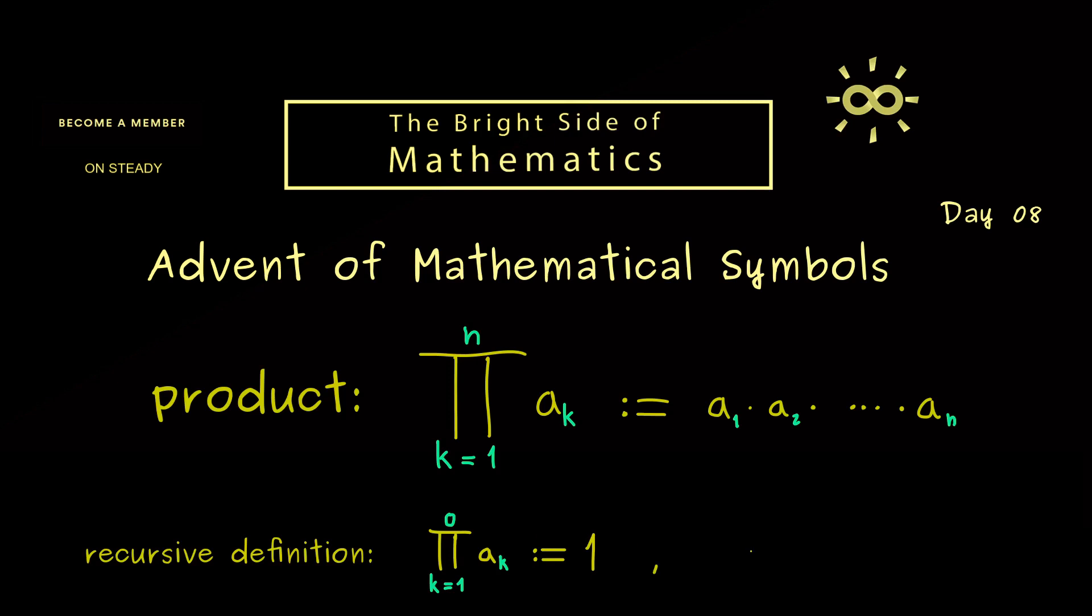And now you might already know for a recursive definition we have to say what happens to the successor when we know the predecessor. This means that here on the right hand side we have the product that goes from k equals 1 to n-1, and we want to reach this product where k goes from 1 to n. And of course the only meaningful thing would be to multiply on the right hand side with a n. Ok, and that's the recursive definition.